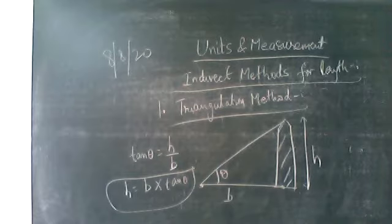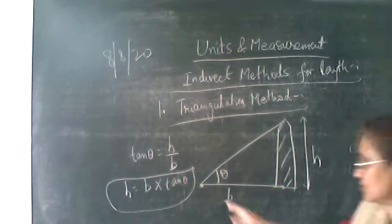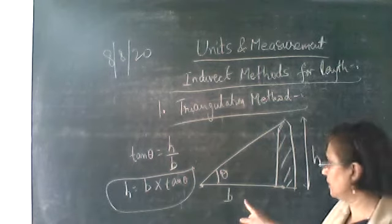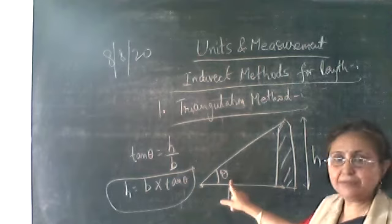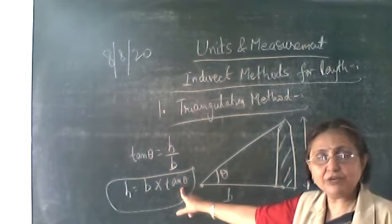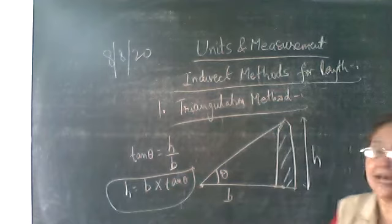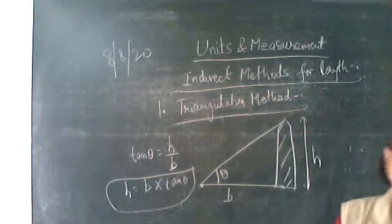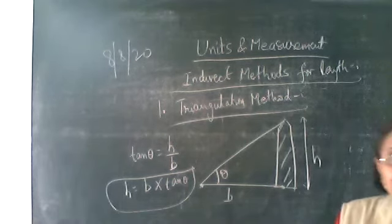So by using the formula h = b × tan θ, the height of the tower or mountain can be determined. Here b is the distance of the observer from the foot of the tower, and θ is measured with the sextant. tan θ can be calculated from a table. This is the triangulation method.